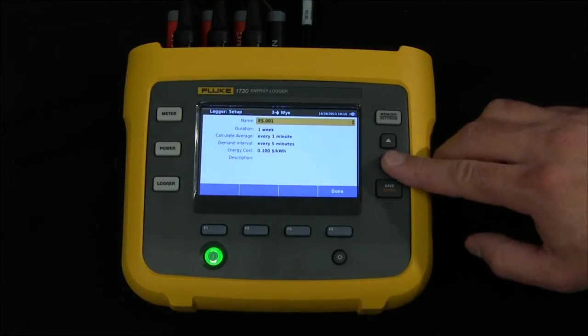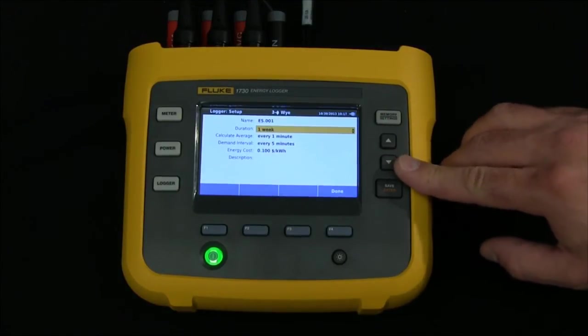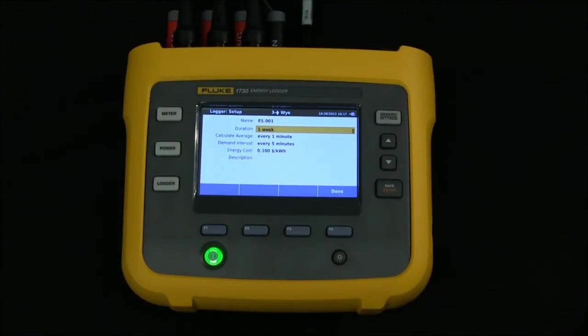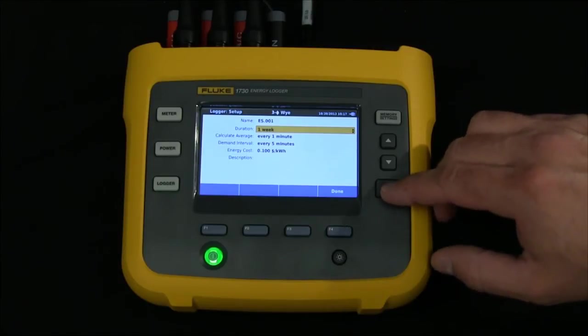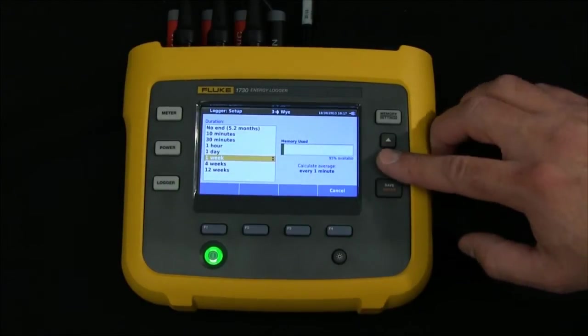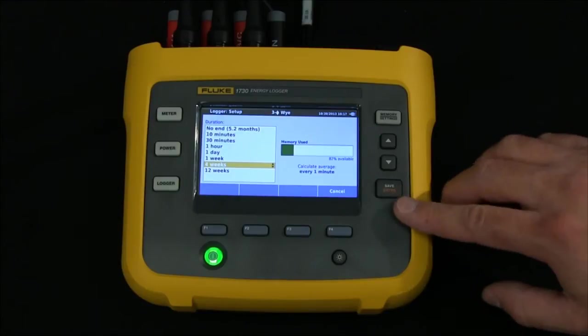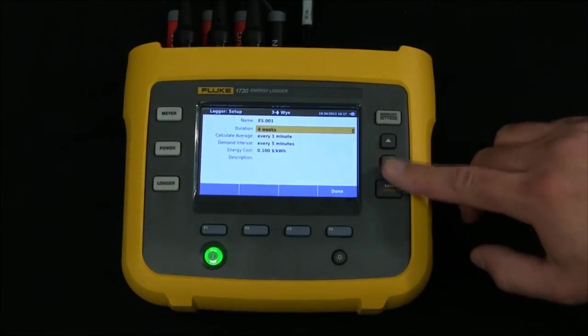I can give it a custom name. I can tell the unit how long I want it to run. In this case, I'm going to do a month recording. So I hit enter. I'm going to go ahead and set it for four weeks, which will give me my month period of time.